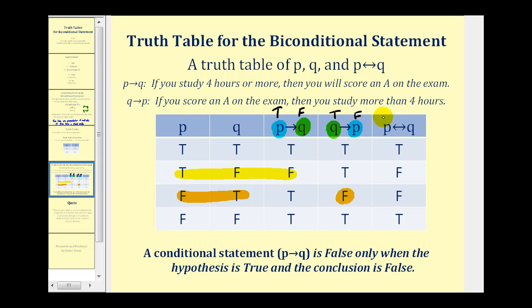And so now to complete the column for the biconditional statement, p if and only if q, we need to find where both the third and fourth column are true. And notice that occurs here and it also occurs here.